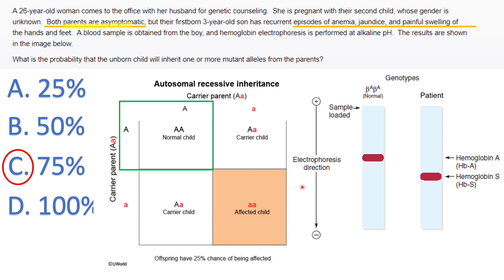If their son is affected, he must be homozygous for the recessive allele, getting one recessive allele from his father and one from his mother — so his parents must have been carriers. If the parents are asymptomatic and they have an affected child, this is an autosomal recessive condition and the parents are heterozygous carriers. That's what you should infer. I hope this video helped — let me know what you think in the comments.